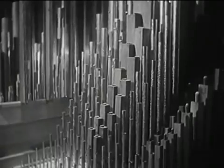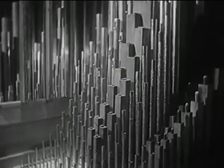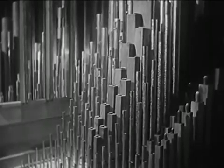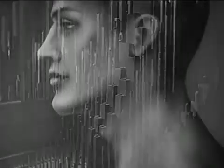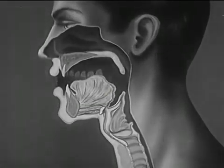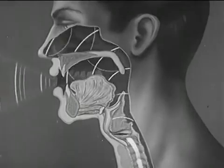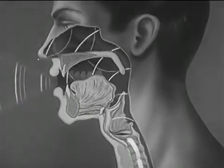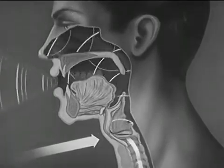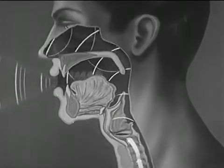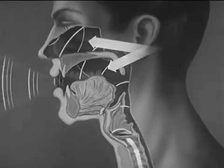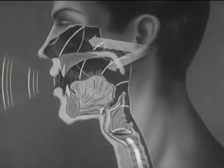Besides woodwind instruments and organ pipes, another mechanism that depends upon a vibrating column of air for its sound is the vocal mechanism of man. Sound waves result from vibrations of air that start in the vocal folds of the trachea. These waves are reflected back and forth in the cavities of the mouth, nose, and head, thus producing the complex sounds of speech and song.